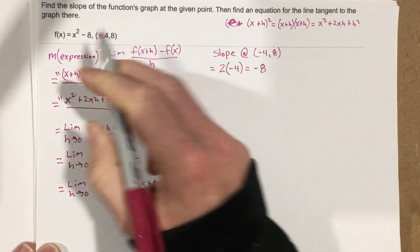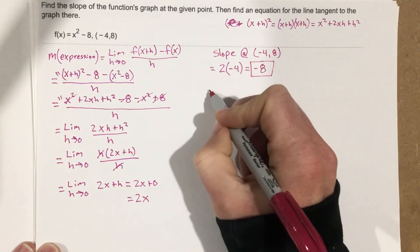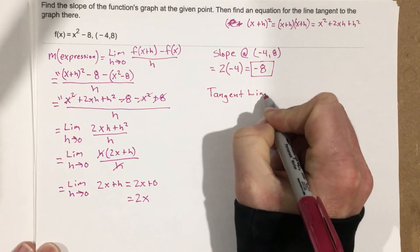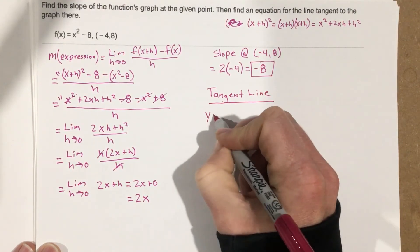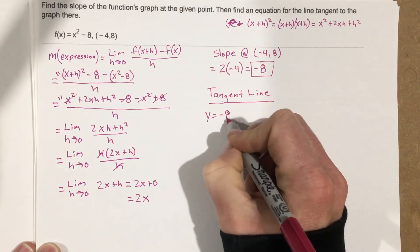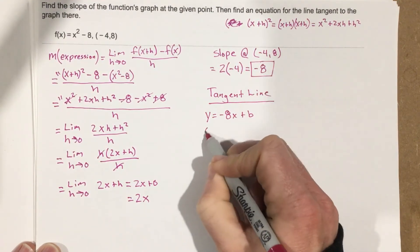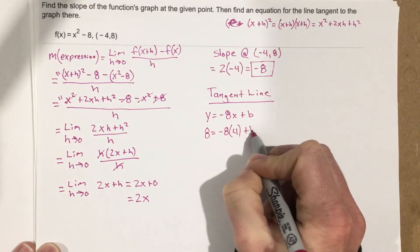And by the way, that's the first part, so I'm going to circle this. And then they want us to find the tangent line. So the tangent line is going to be y = -8x + b. We're going to plug in -4 and 8, so that's 8 = -8 times 4 + b.